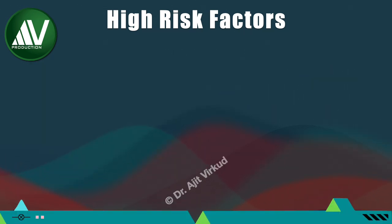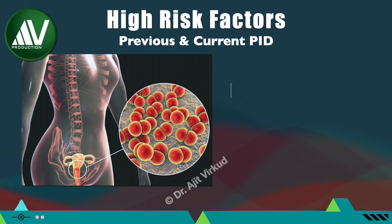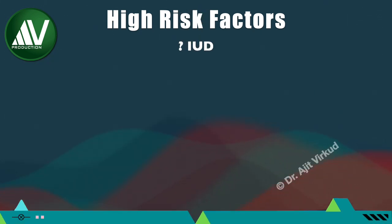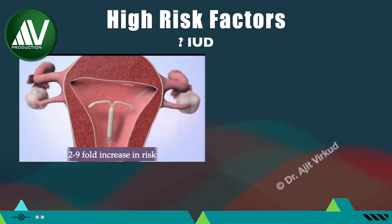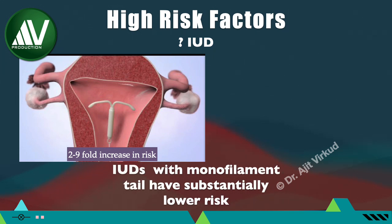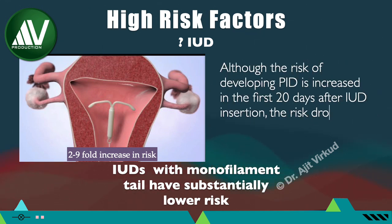One of the most important risk factors for PID is previous PID — women with pelvic inflammatory disease are 2–3 times more likely to develop another episode later. Use of an intrauterine device has been linked to a 2–9 fold increase in the risk of PID. The main reason is its multi-filament tail, which acts as a ladder along which bacteria from the vagina can climb into the uterine cavity. This is why IUDs like the Dalkon Shield, lipid loop, copper-7 and safety coil have been discontinued. Currently available IUDs have a monofilament tail, posing a substantially lower risk, and the most significant risk period is the first 20 days after insertion.